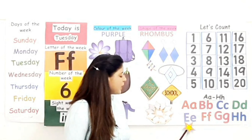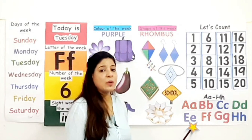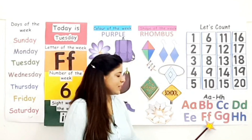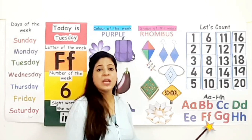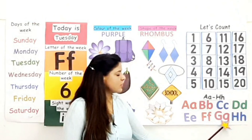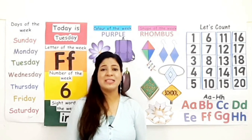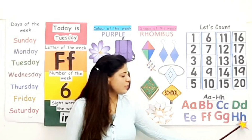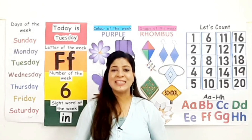This is uppercase letter E, this is lowercase letter E. Letter E makes a sound. This is uppercase letter F, this is lowercase letter F. Letter F makes a sound. This is uppercase letter G, this is lowercase letter G. Letter G makes a sound. This is uppercase letter H, this is lowercase letter H. Letter H makes a sound.